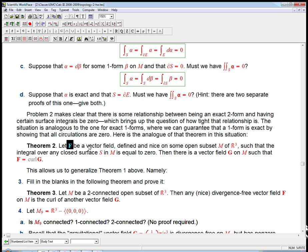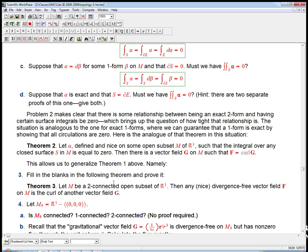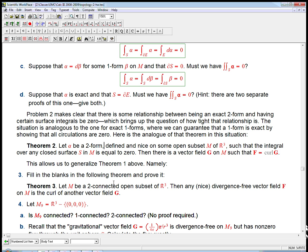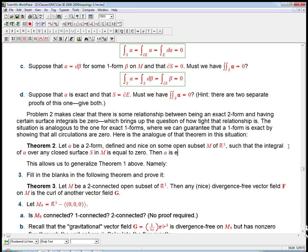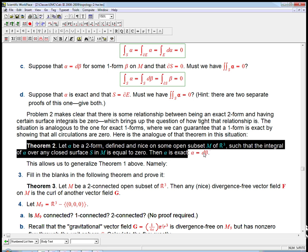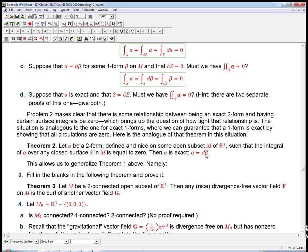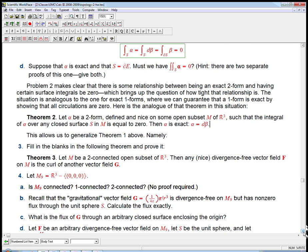For exact one forms, where we can guarantee that a one form is exact by showing that all circulations are zero, all integrals over a closed curve. So, here's theorem two. We need this to be, let alpha be a two form, defined and nice on M, such that the integral over any closed surface S in M of alpha is equal to zero, then alpha is exact. In other words, alpha is d beta. And this is, again, I'm not going to prove this theorem. This is a big theorem that says that you can detect the existence, the able to sort of integrate alpha by and find it sort of an anti-derivative of it, by integrating over all closed surfaces and saying it's equal to zero.